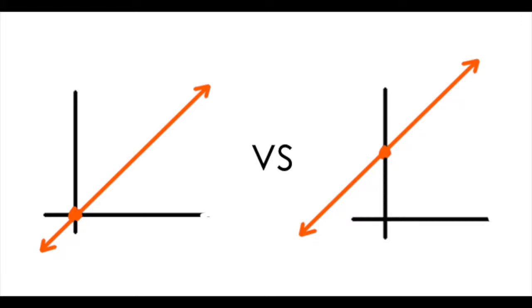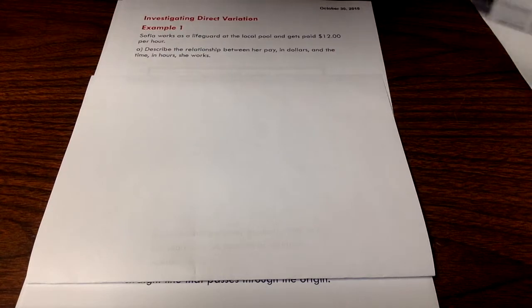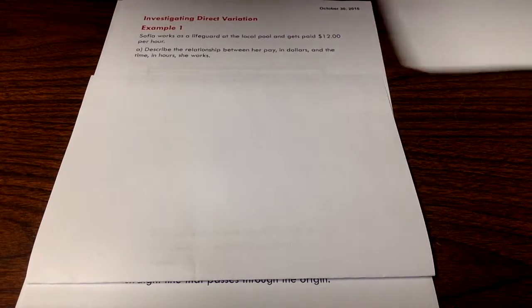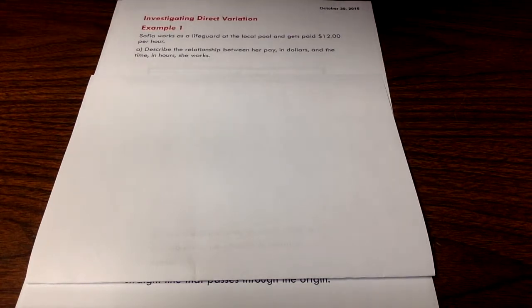I'm going to kick it off here with a lesson on direct and partial variation. For an example, this girl is working as a lifeguard at a local pool and she gets paid $12 per hour. So the goal here is to describe the relationship between her pay in dollars and the time in hours that she works.